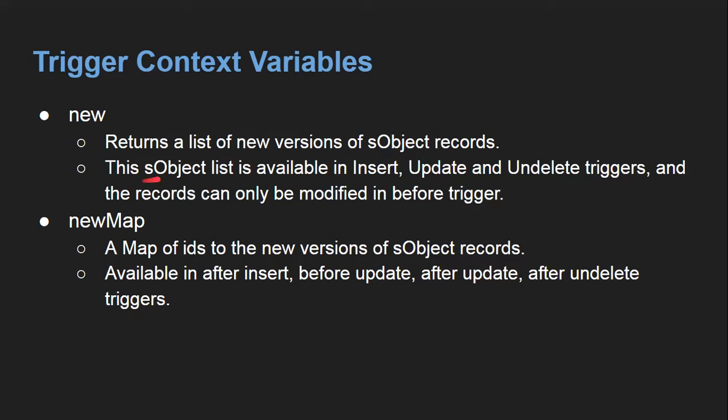Then we have Trigger.old and Trigger.oldMap. 'old' returns a list of old versions of SObject records. When you are updating a record, it will have two states: the existing values and the updated record with new values. The existing values will be in Trigger.old and the new values in Trigger.new. The old list context variable is available in before update, after update, before delete, and after delete. Trigger.oldMap is a map of IDs to the old version of SObject records, also available in before update, after update, before delete, and after delete triggers.